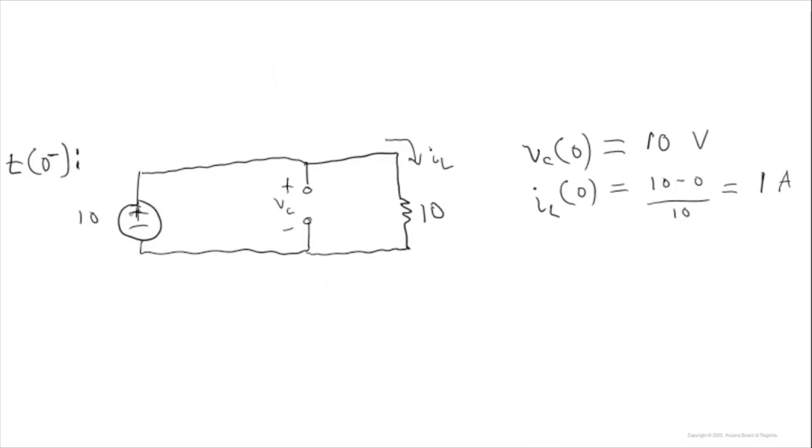First, let's find the values we need just before the switch is flipped. Those values will be the voltage across the capacitor and the current through the inductor since those values will be the same immediately after the switch is opened. Just by using Ohm's law, we see that the initial voltage across the capacitor will be 10 volts and the initial current through the inductor will be 1 amp.